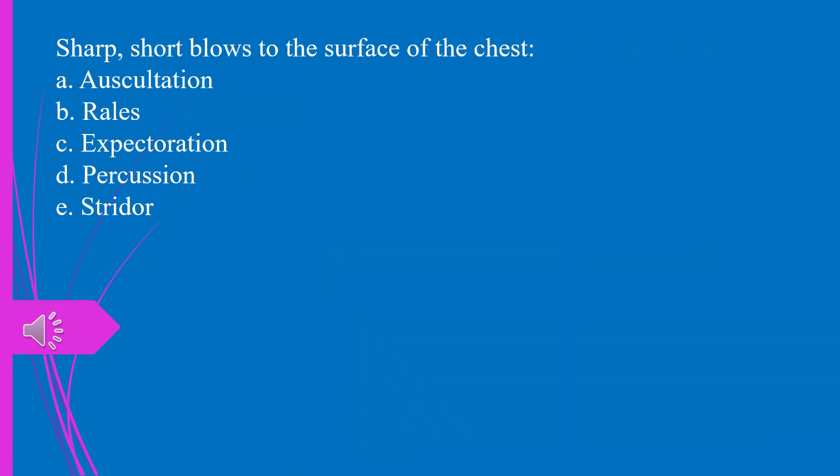Question 29. Sharp, short blows to the surface of the chest: a) auscultation, b) rales, c) expectoration, d) percussion, e) stridor. The answer is d, percussion.